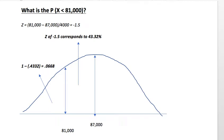I want to go over the solution for last week's problem dealing with determining the probability that the random variable X is less than 81,000. In that problem, if you recall, you were given the mean of 87,000. You were also given that the population is assumed to be normal.